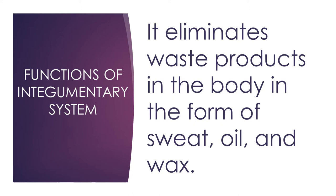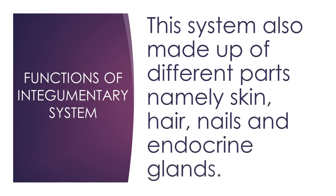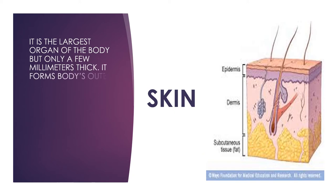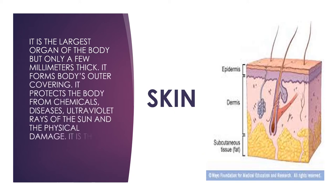The integumentary system also helps expel waste from the body in the form of sweat, oil, and wax. This system is made up of different parts namely skin, hair, nails, and exocrine glands. The skin is the largest organ of the body.